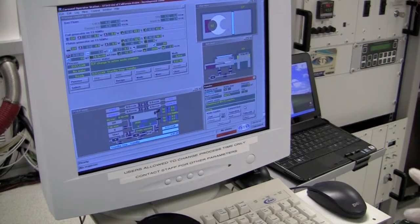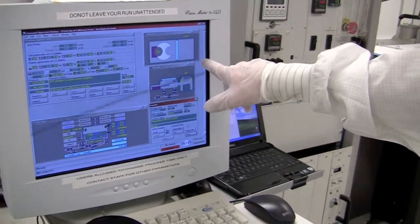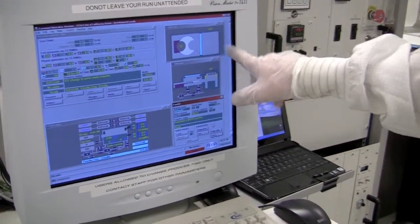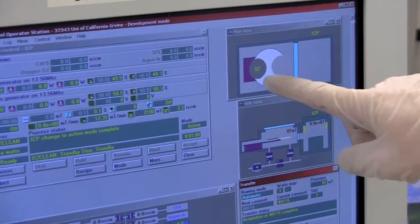So, now the software has finished mapping the carousel. As you can see, we have two positions and we only have a wafer on position number one.